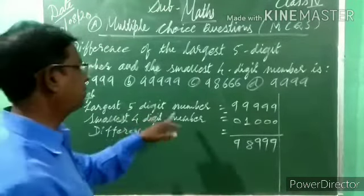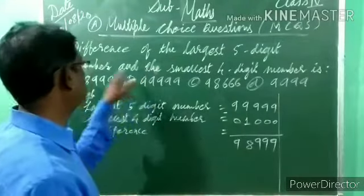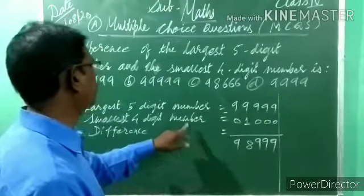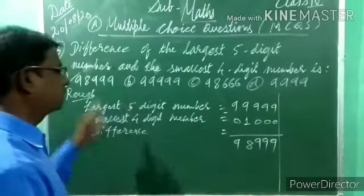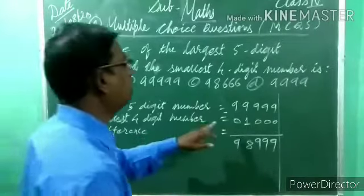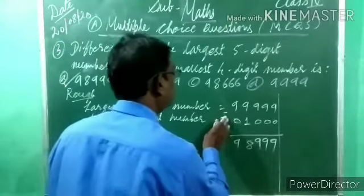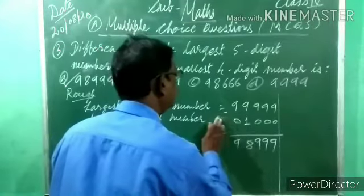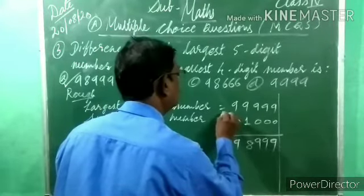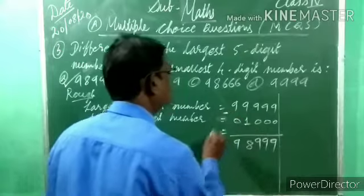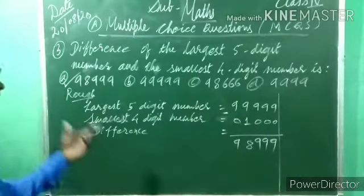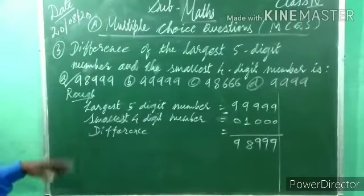Write the largest five-digit number, then the smallest four-digit number, apply difference — meaning minus — and you will get the answer. Understood?